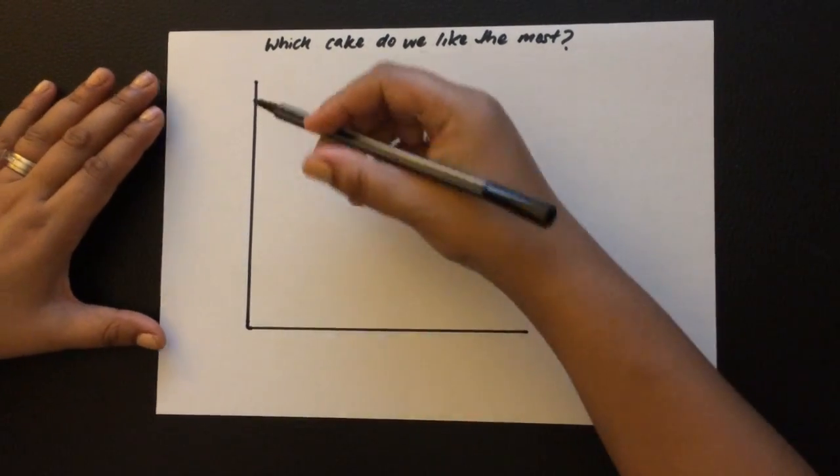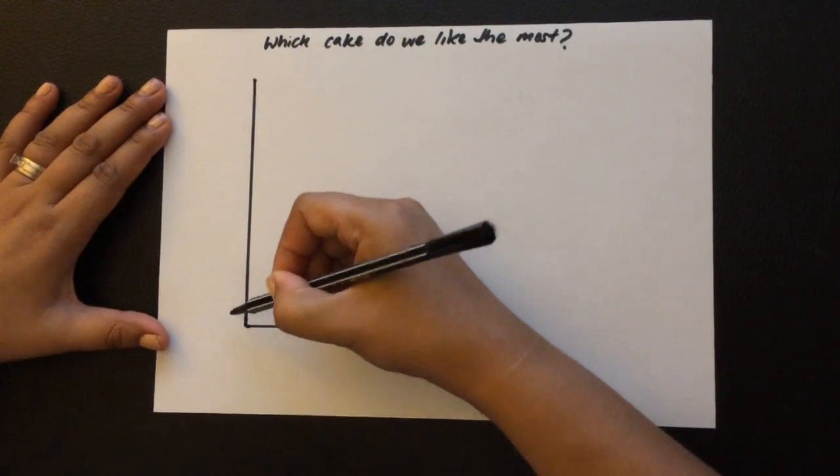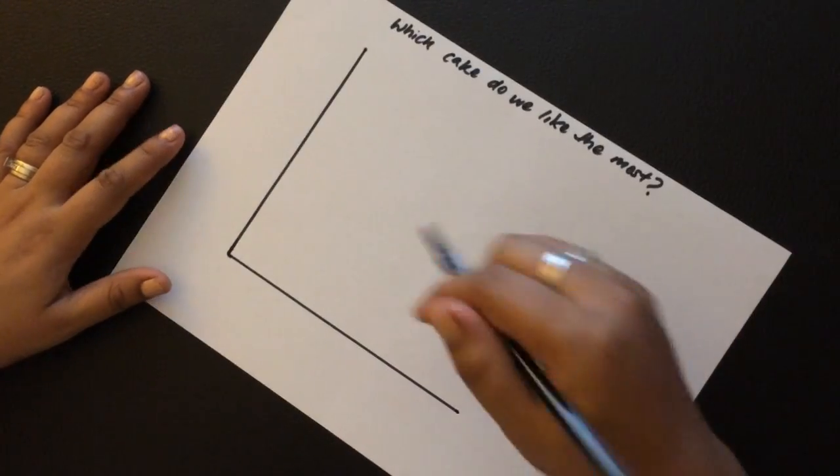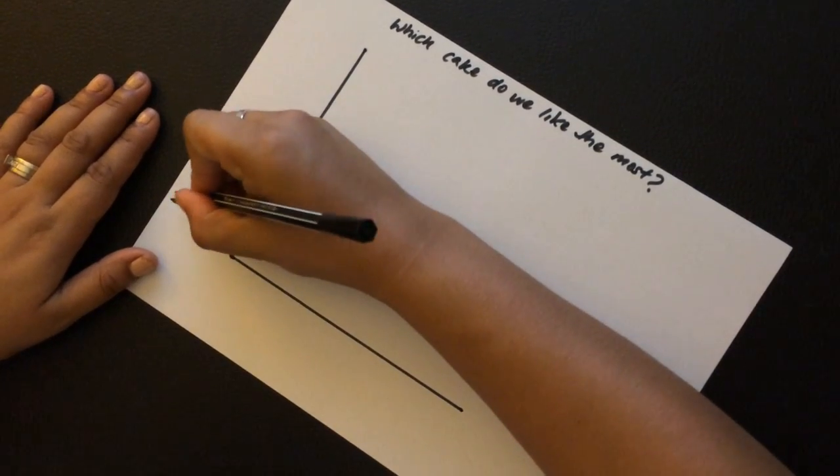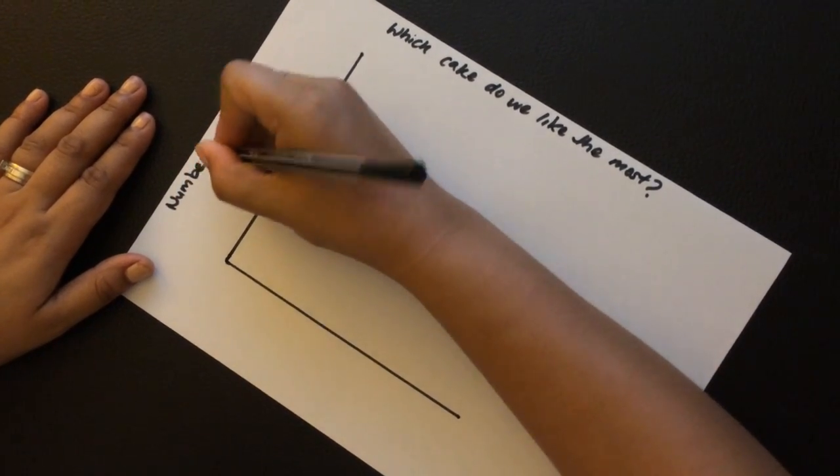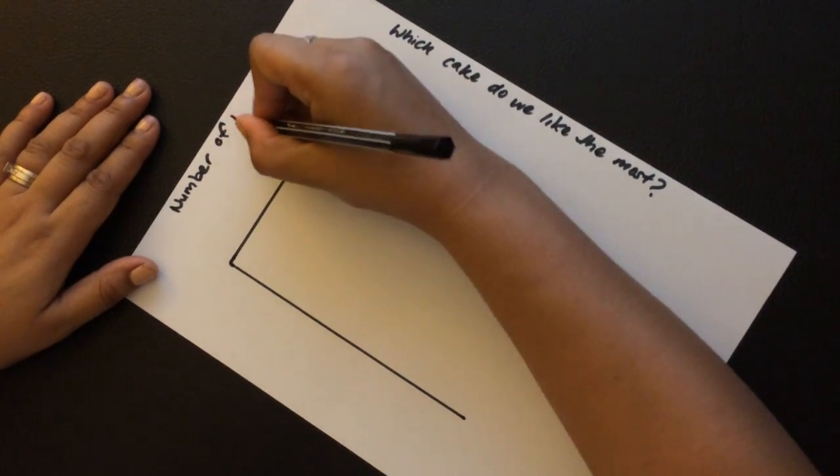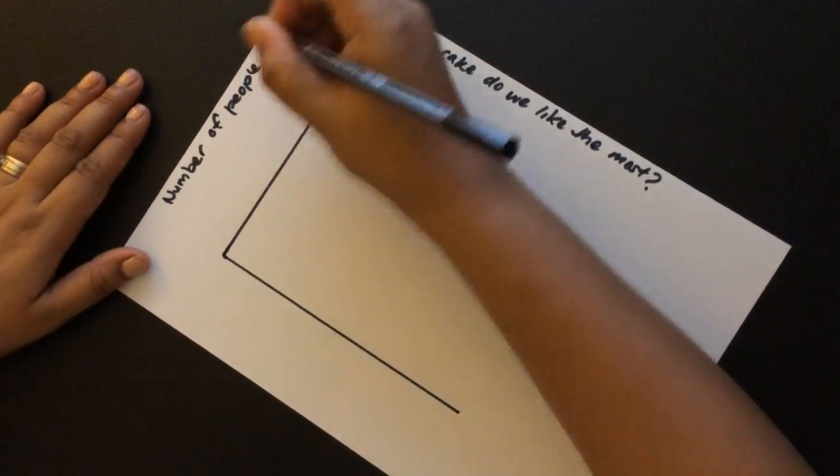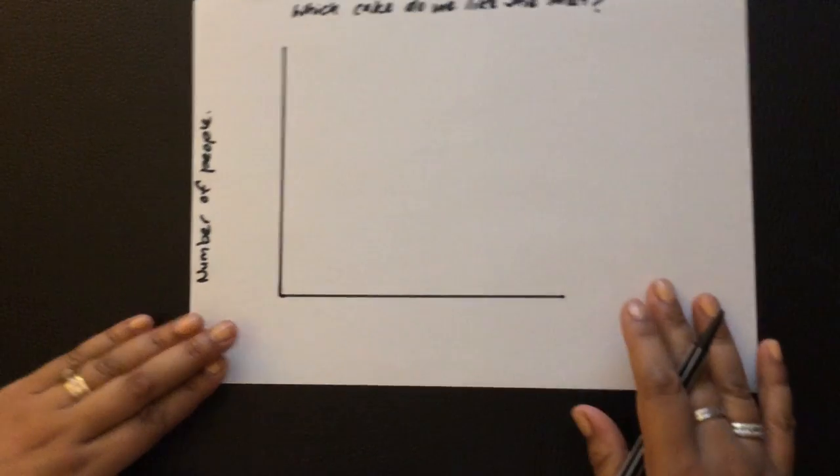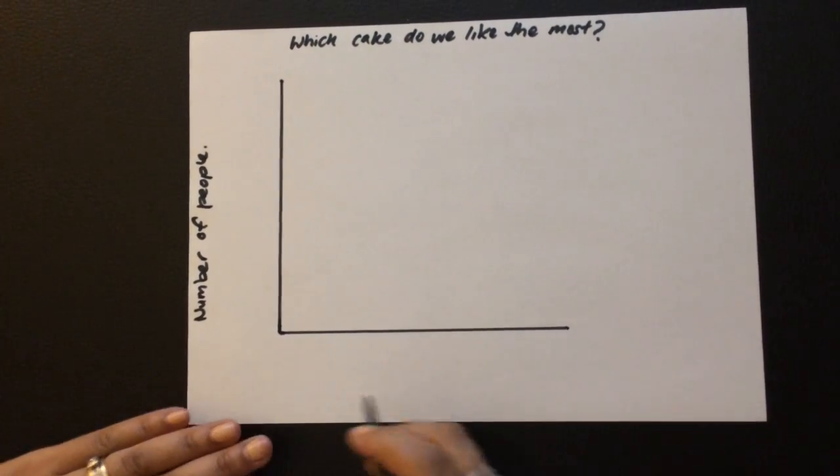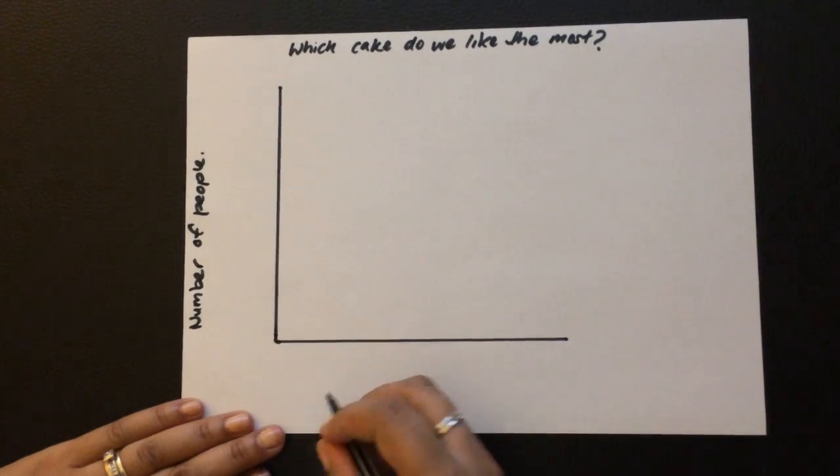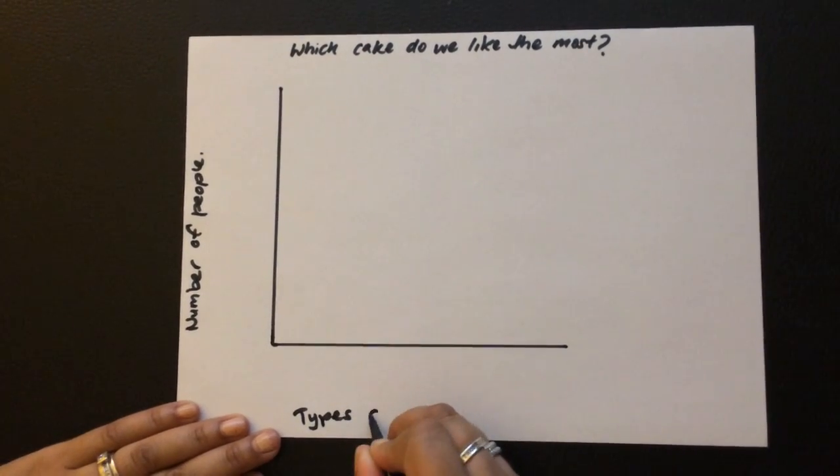Now this axis is for numbers, so in this case we would write the number of people. This would signify the number of people that like which cake, and this axis down here we would use for the types of cake.